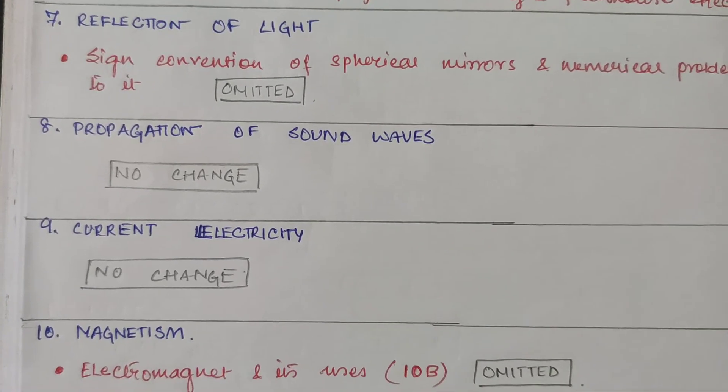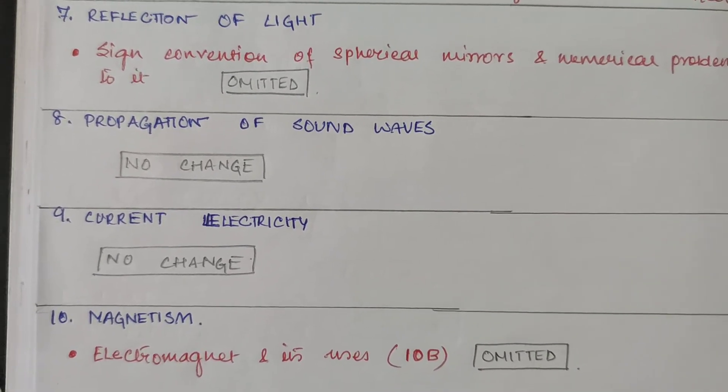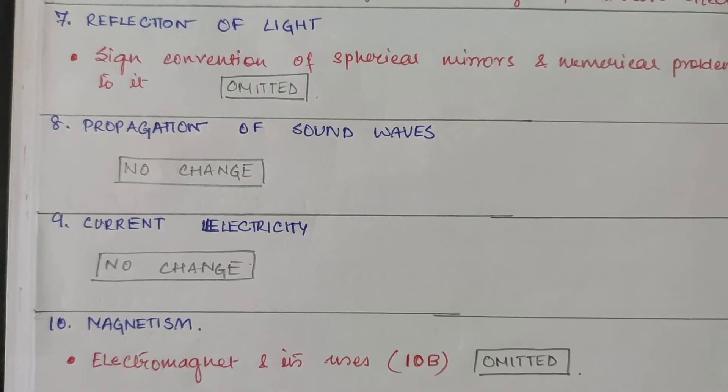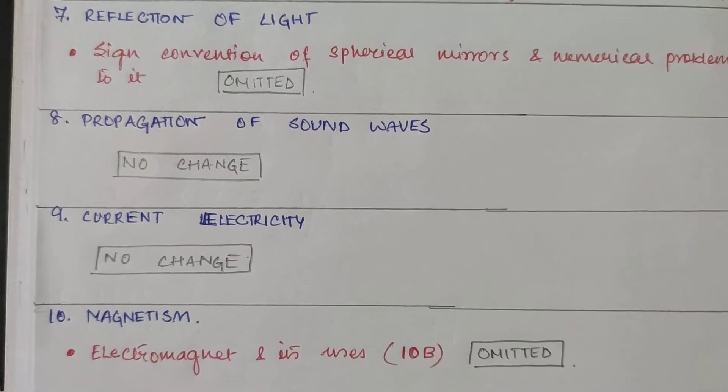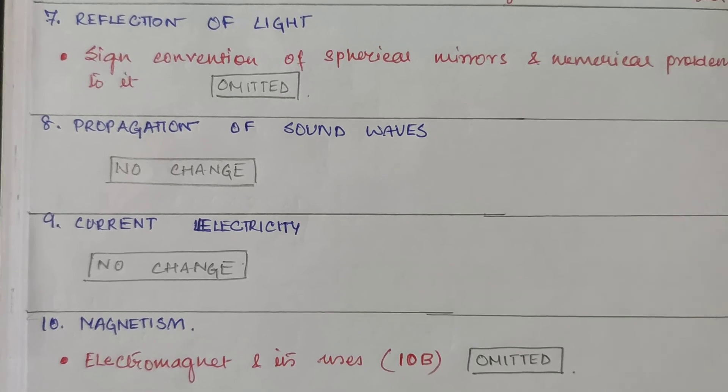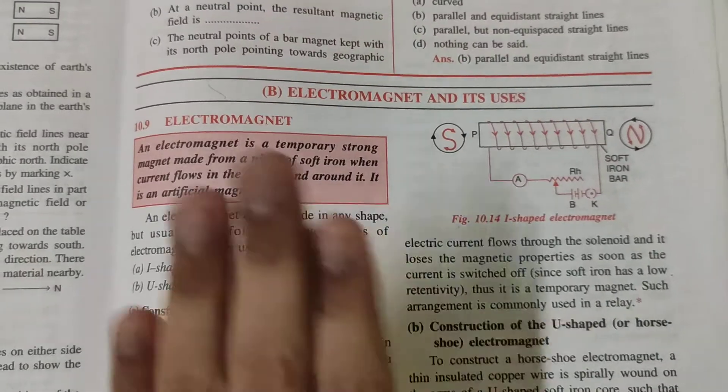Magnetism, chapter 10. You will find chapter 10B, electromagnet and its uses, it has been omitted. So we will study only chapter 10A. We won't study this, okay.